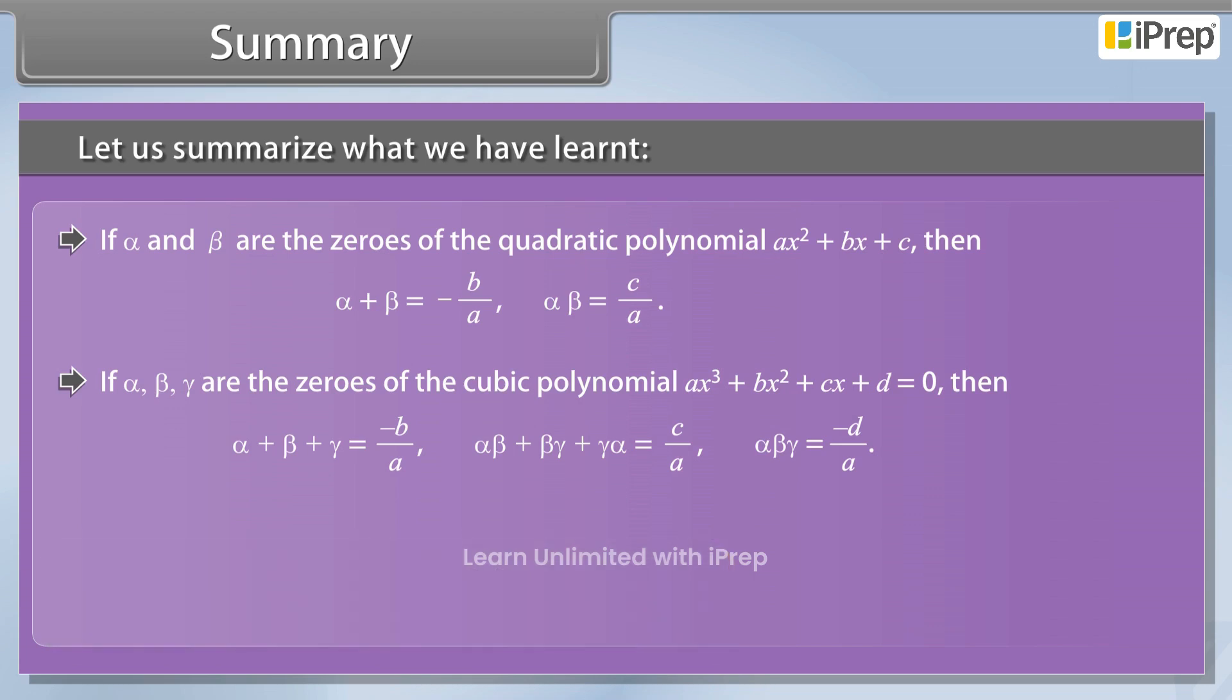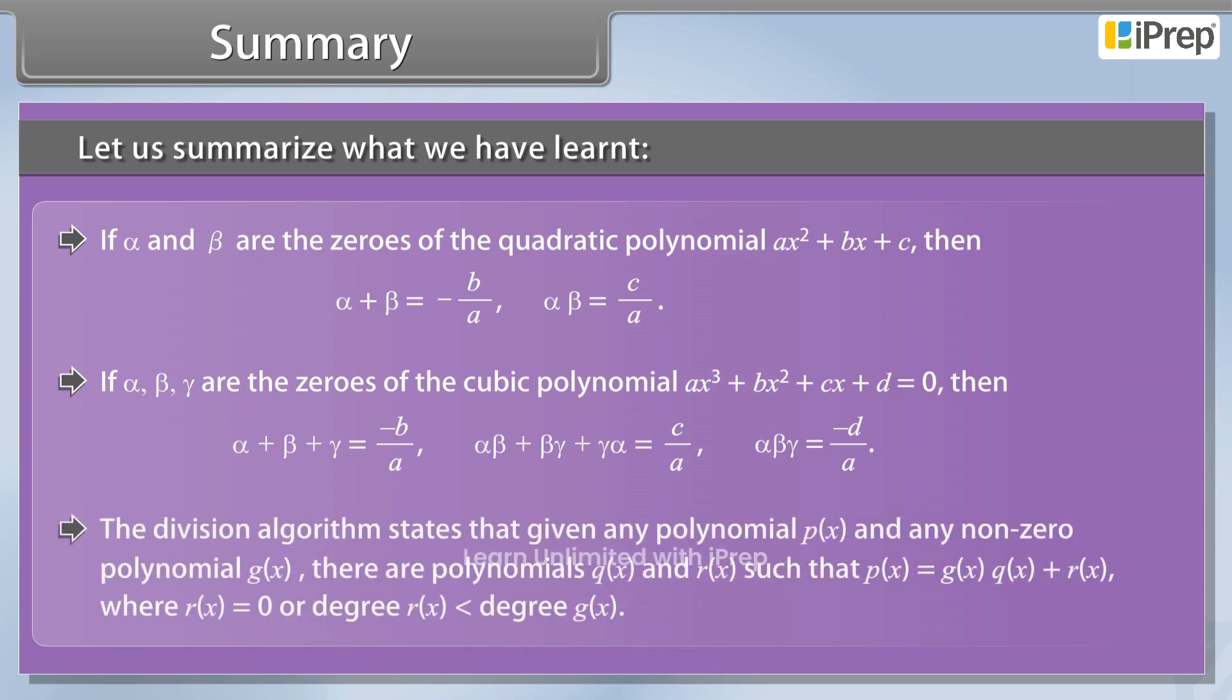The division algorithm states that given any polynomial PX and any non-zero polynomial GX, there are polynomials QX and RX such that PX equals GX QX plus RX, where RX equals 0 or degree RX is smaller than degree GX.